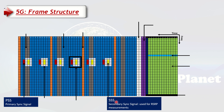Because PSS and SSS are one symbol apart, when you know both of them together you can also find out your timing synchronization. After that, the UE needs to know the MIB — the Master Information Block — which is carried by the PBCH. The PBCH carries the MIB, which includes the system frame number and also carries some configuration of other channels like DMRS and PDCCH, so it's very important for network entry.